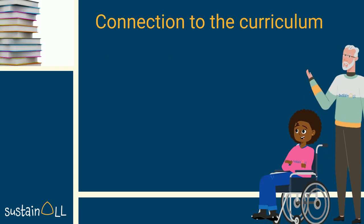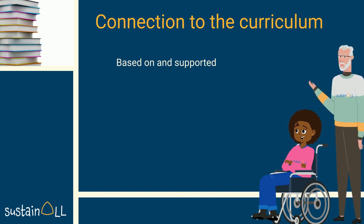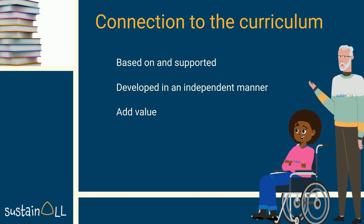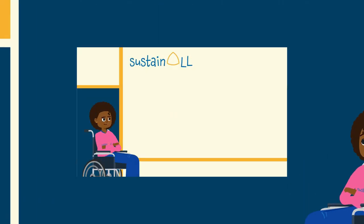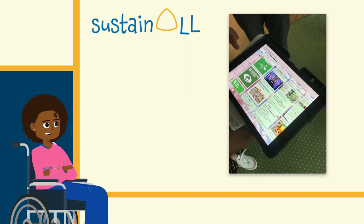There are three types of associations between the curriculum and sustainability programs. Sustainability programs may be based on and support the implementation of the curriculum. The program may be developed independently but be a complement of school curricula, adding value and even extending the curriculum. In the scope of SustainAll, an Erasmus Plus project, good examples of projects that connect all-day schooling to the curriculum were collected. To see real examples of how the extended time students spend at school can be used for sustainability projects connecting ESD to curricular areas, don't forget to watch the inspirational and national SPARP videos.